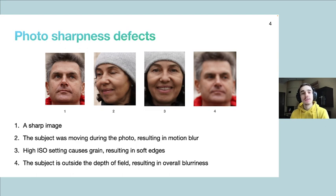Please have a look at this example. The first image is considered sharp. Image number 2 has motion blur, image number 3 is soft due to grain, and image number 4 has the subject outside the depth of field, which results in overall blurriness.